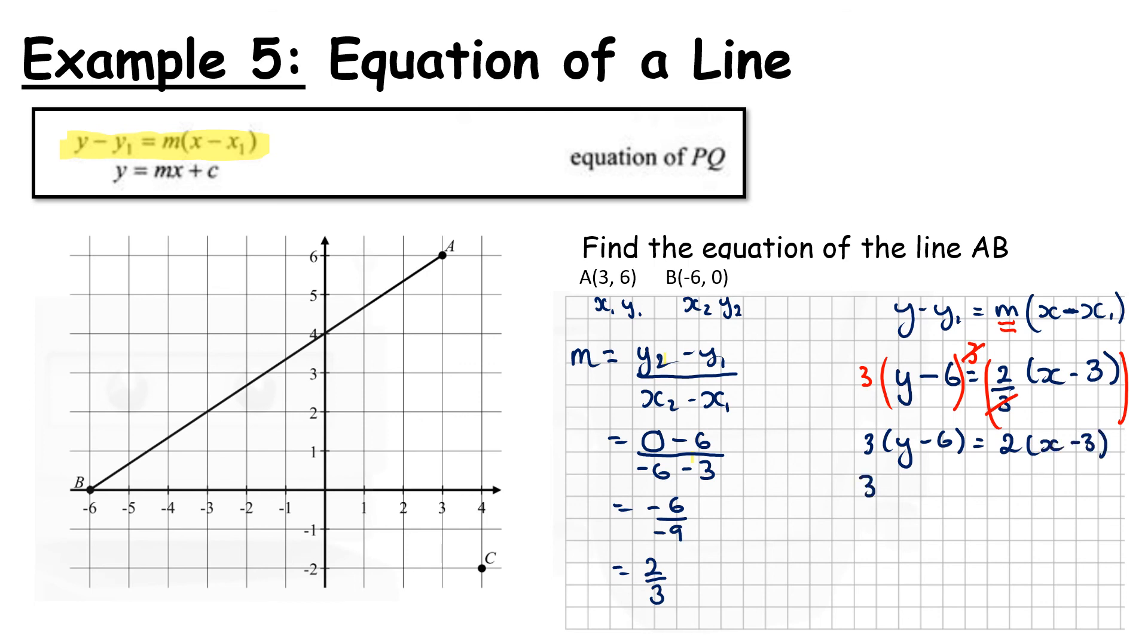And that gives me 3 times Y minus 6 is equal to 2 times X minus 3. We multiply that out. 3Y minus 18 equals 2X minus 6. They didn't tell us what form to have. So the only piece you have to make sure you do is to bring these two constants together because they have to come together. But we're going to rearrange this as 3Y. I'm going to add an 18 to both sides. So 2X minus 6 plus 18.